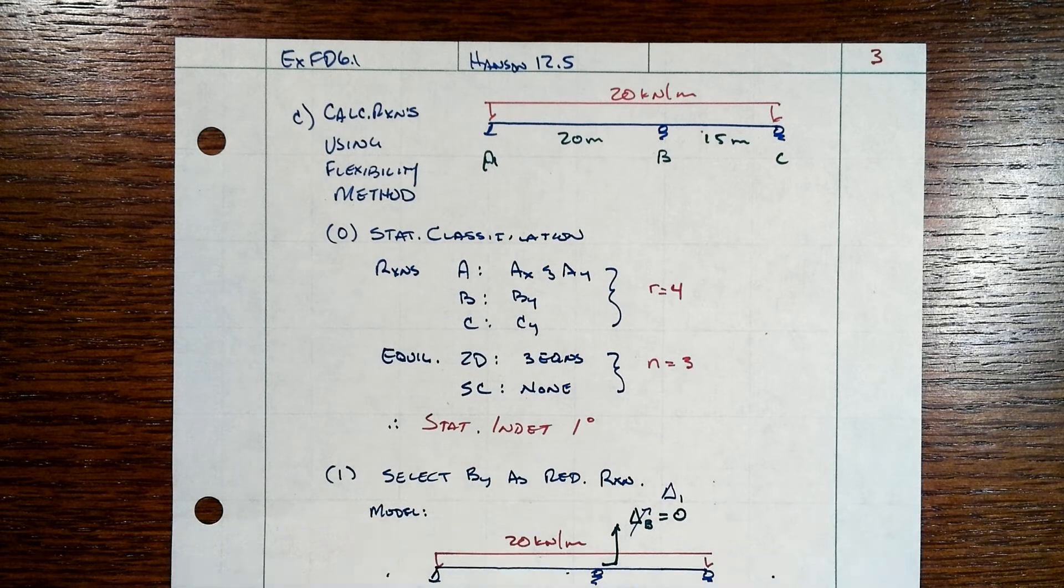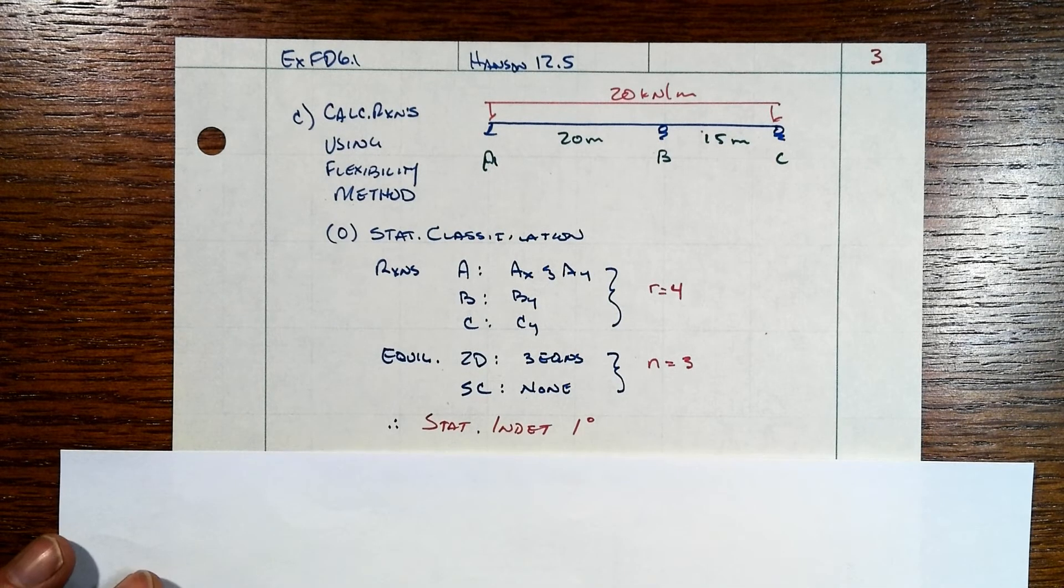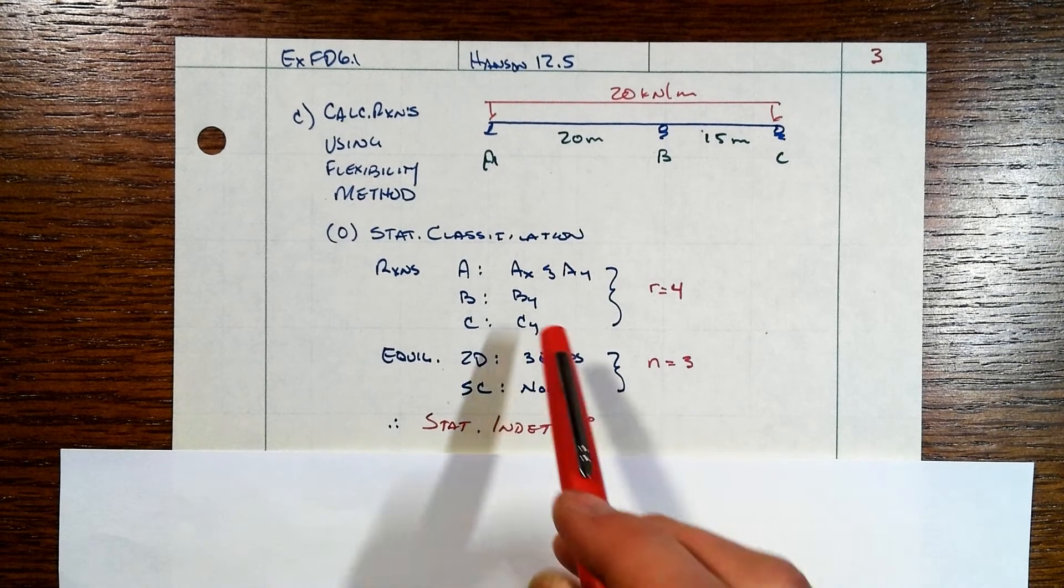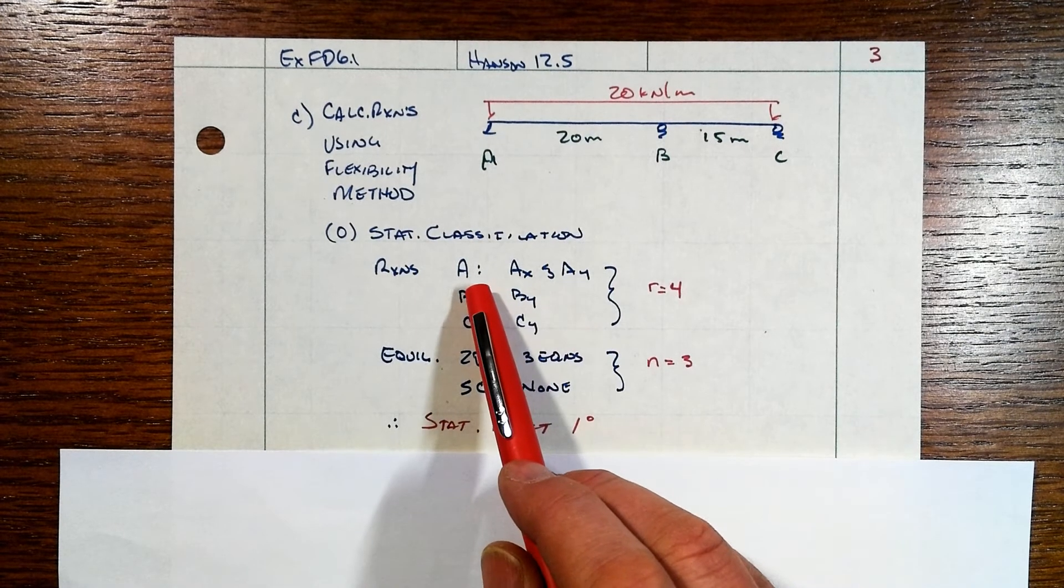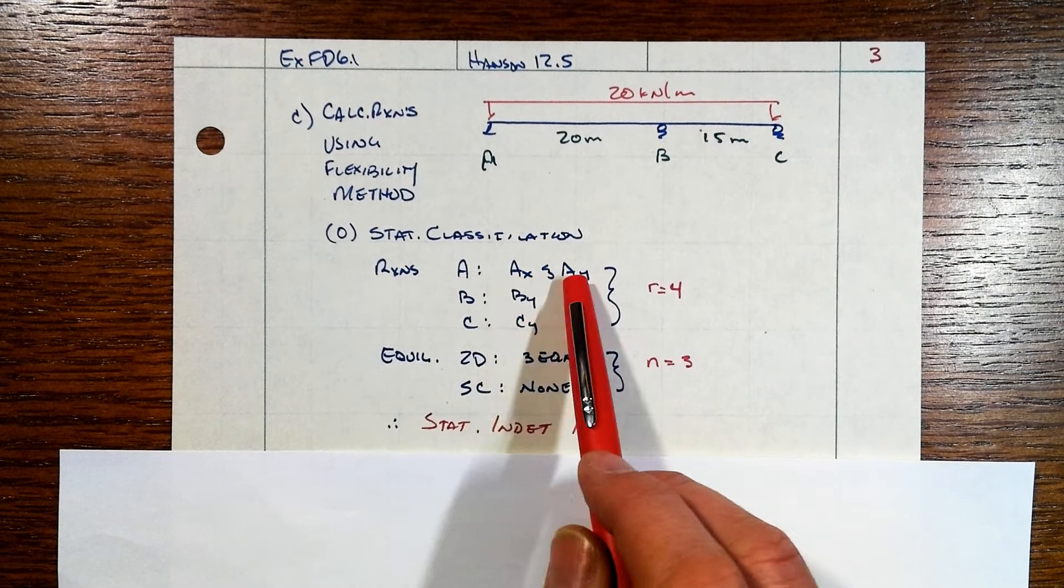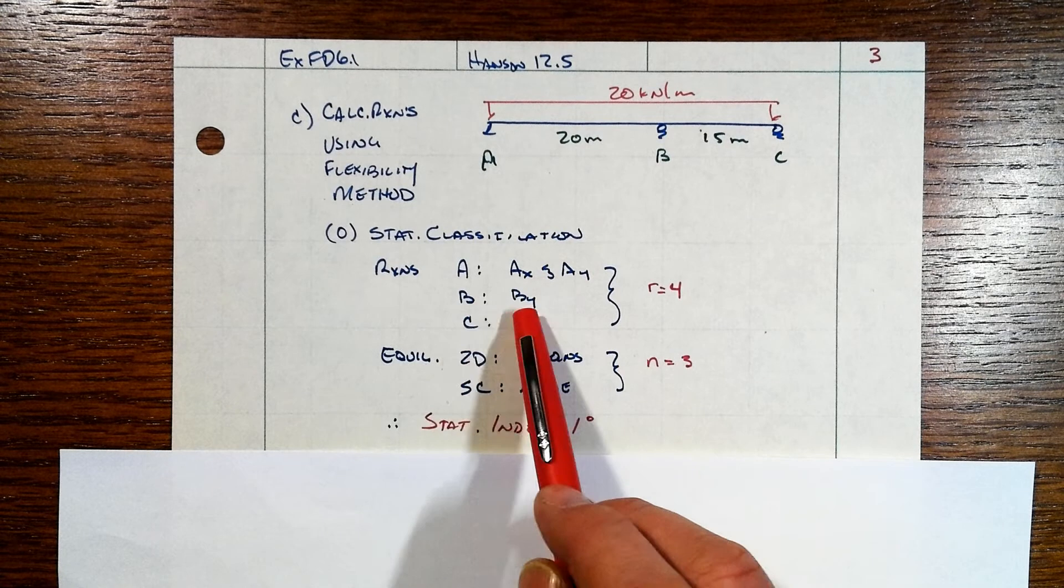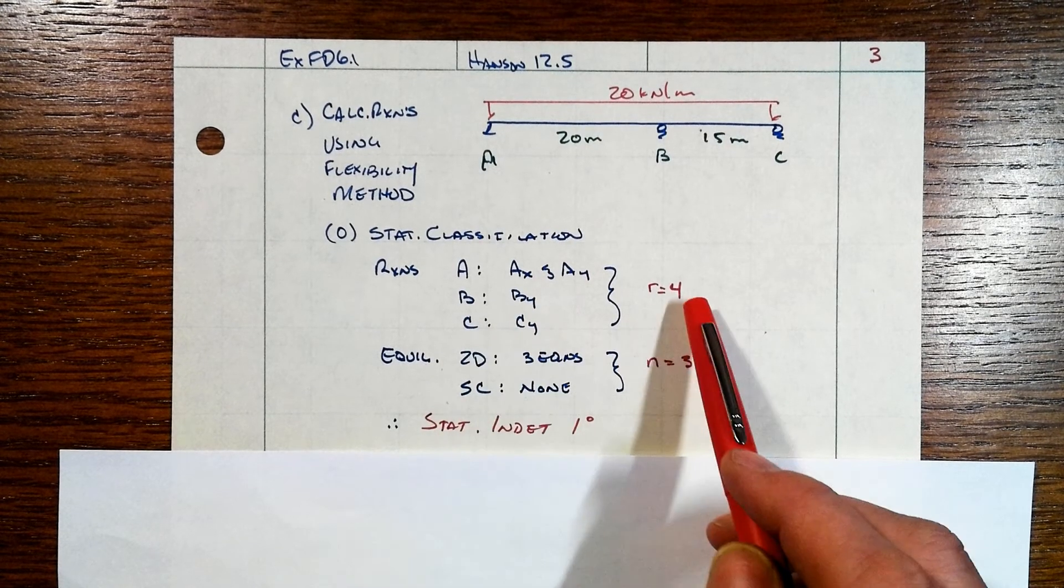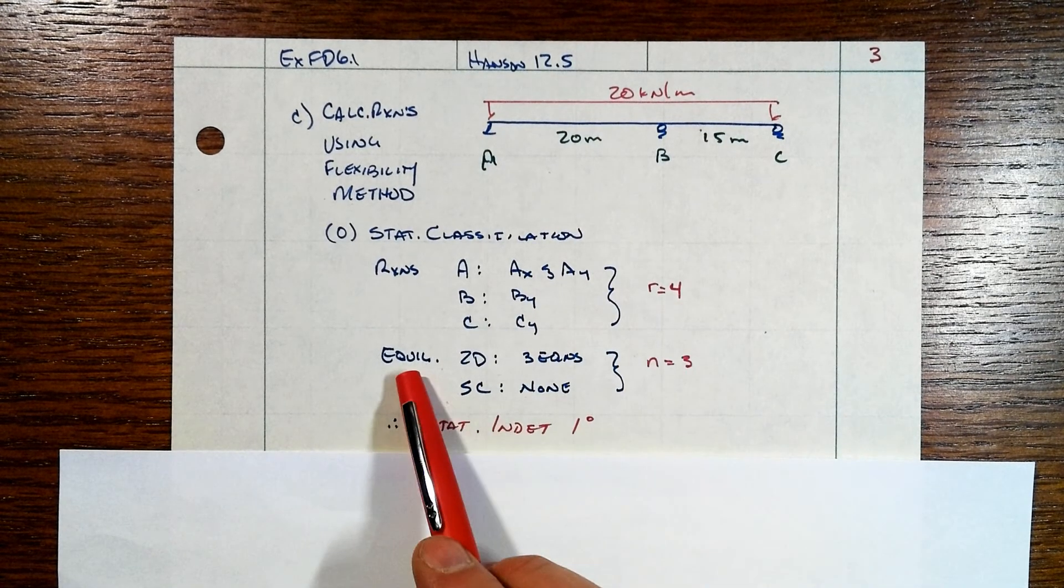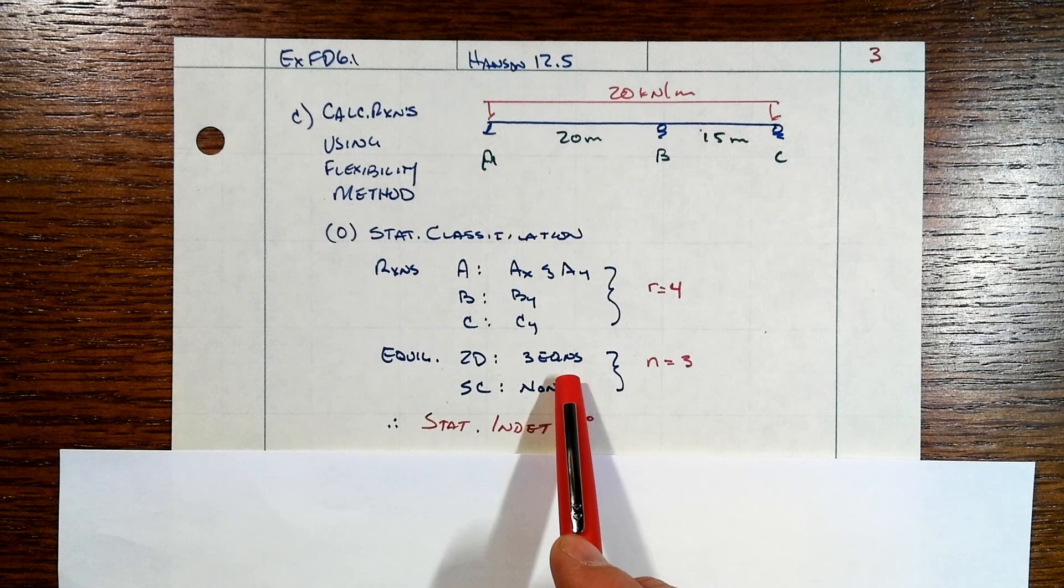Why do we have to do all this additional complex work? Well, it's all because, take a look at the number of reactions we have. At A, we got two possible reactions. At B, just one. C at one, that's a total of four. And then equilibrium-wise, well, we're in 2D, so we have three equations of equilibrium.